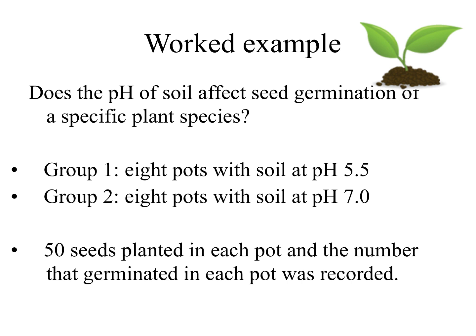Here's another example: does soil pH affect seed germination of a specific plant species? Two sets of pots were used — one with soil at pH 5.5 and one at pH 7.0 — with 50 seeds planted in each pot and the number germinating recorded. There were eight different pots at each pH, giving two sets of data that are not directly related to each other, so this calls for the unpaired t-test.